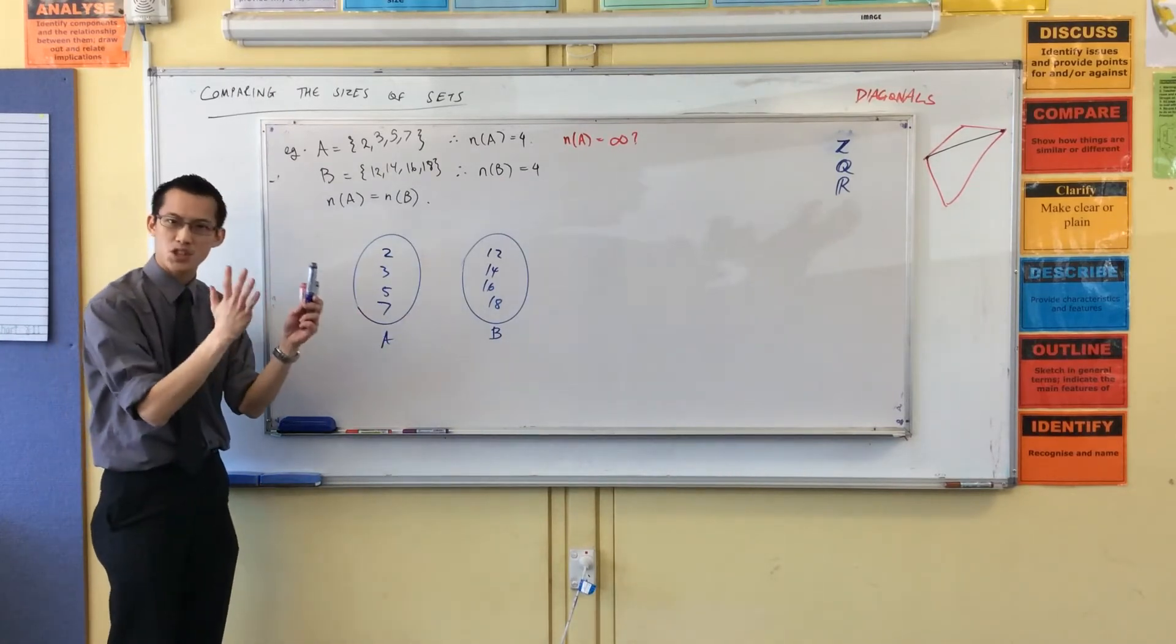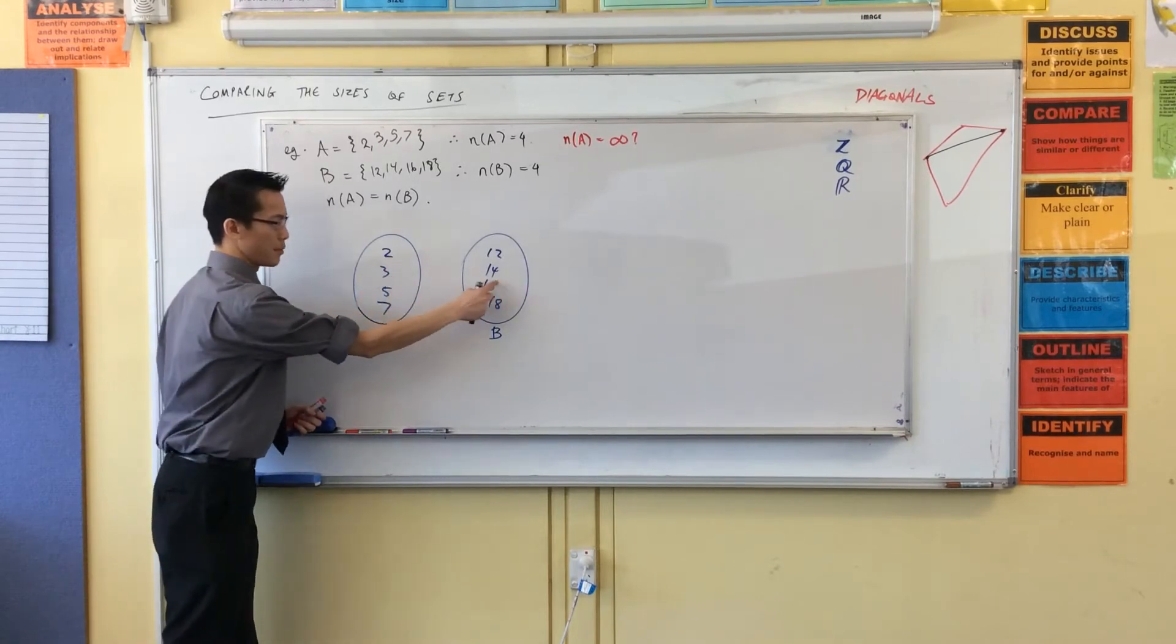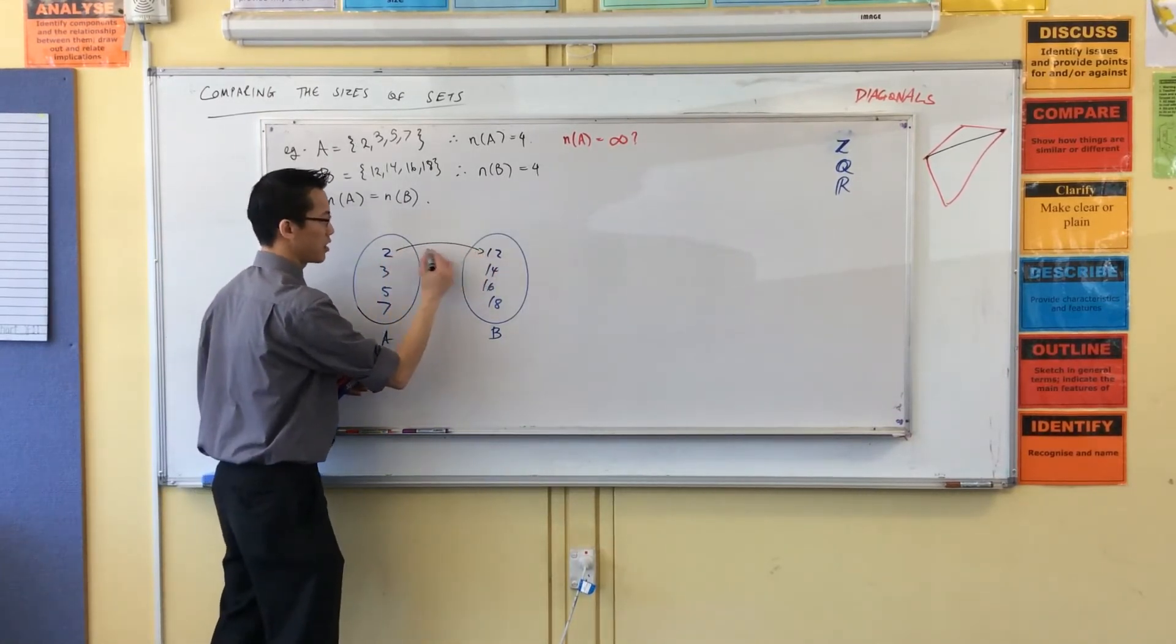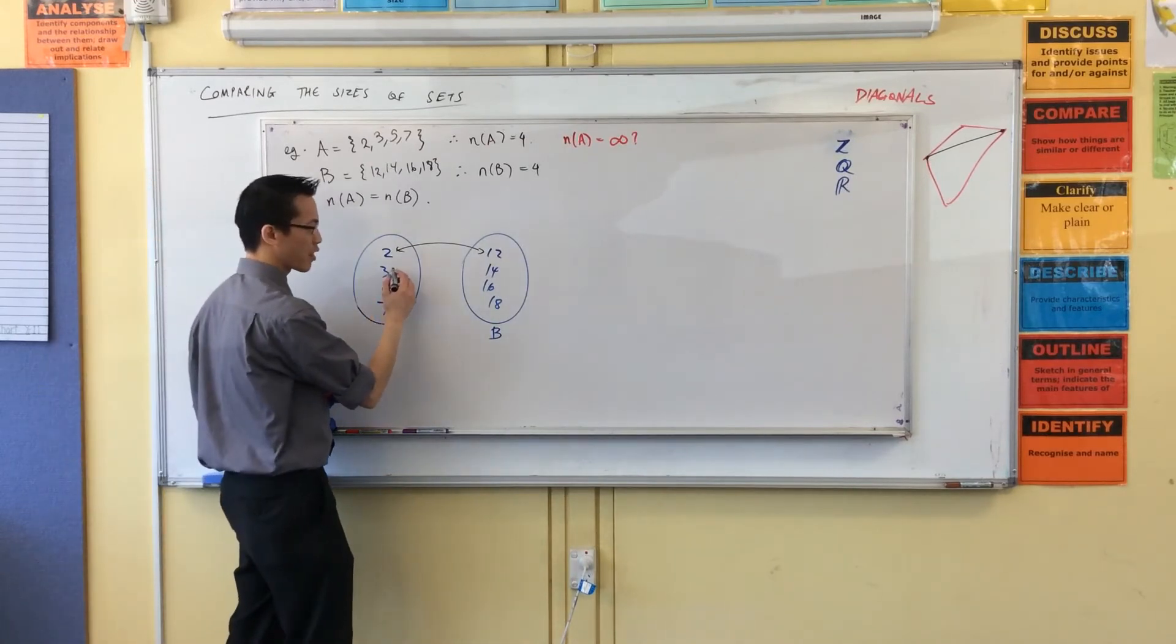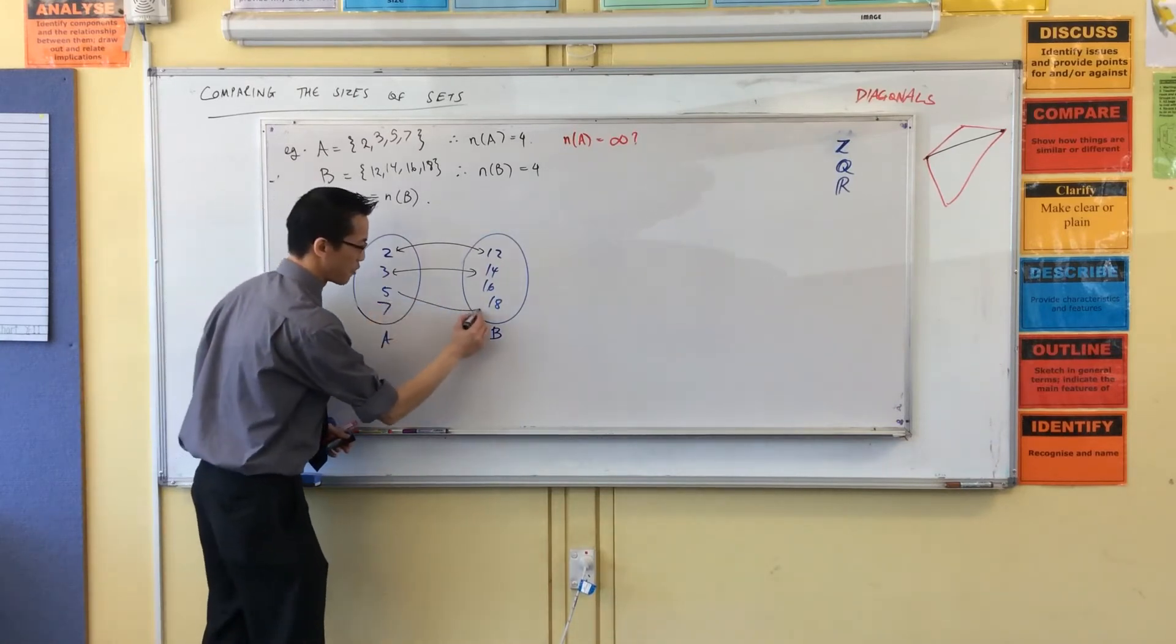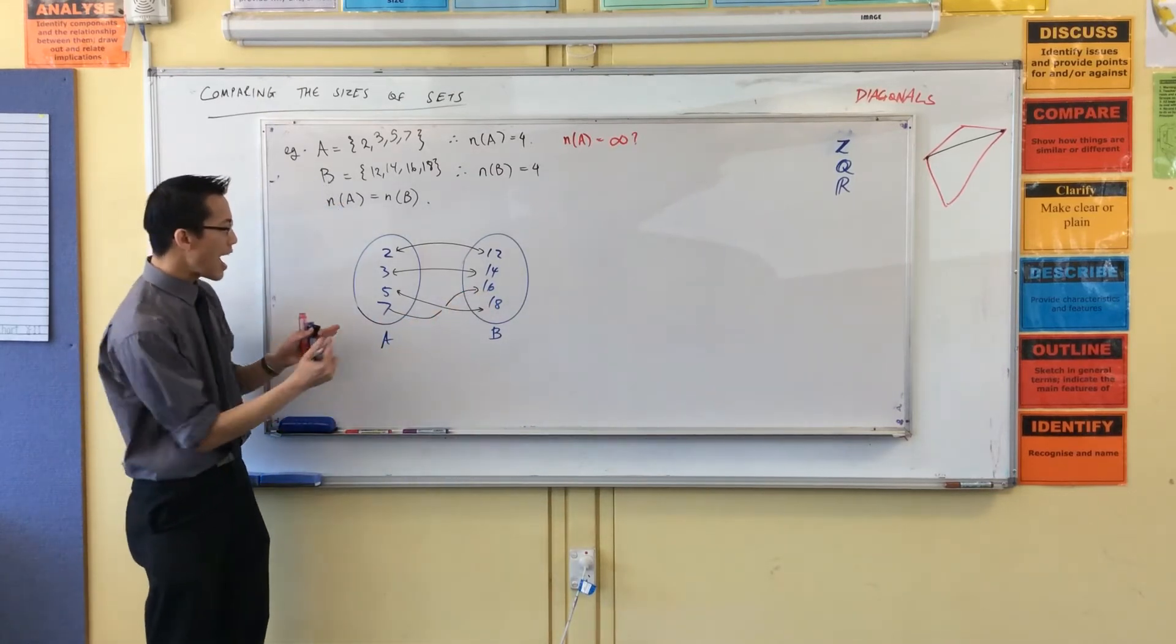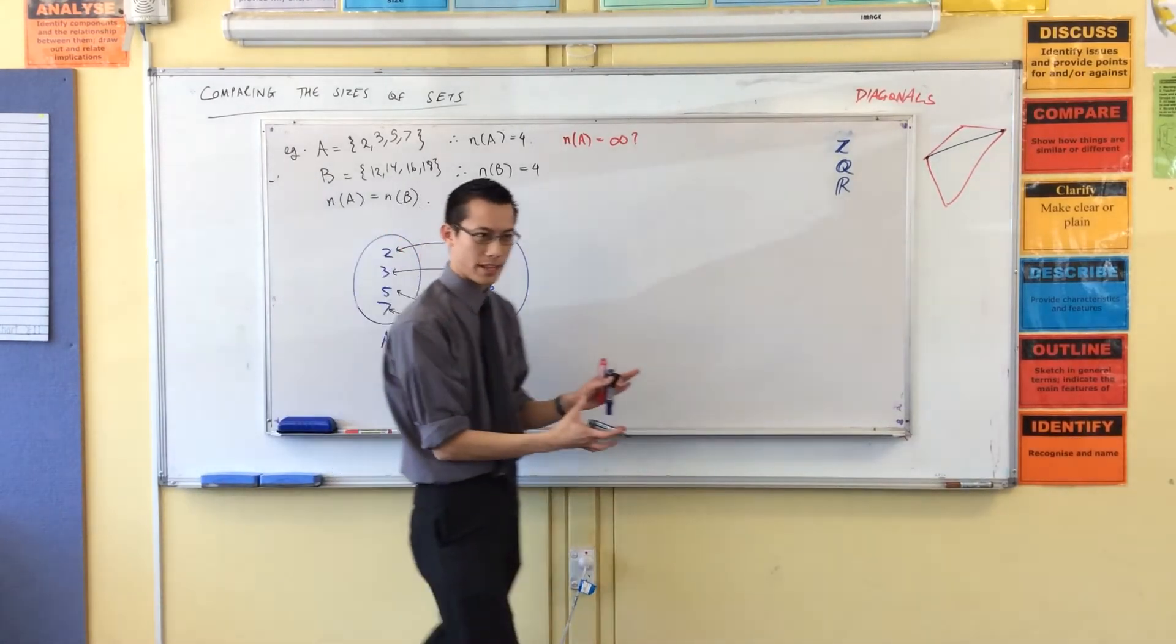I can say, look, every element in each of these sets can be matched or paired with an element in the other set. Look, we can draw it. Let's put the 2 with the 12. Yes, this is a function. Let's put the 3 with the 14. Let's put the 5, just to shake it up, let's put the 5 with the 18. Oh, wow. I know, just stand back, everyone. 7 with the 16. Okay, look, see, I have matched up every element from set A with every element in set B.